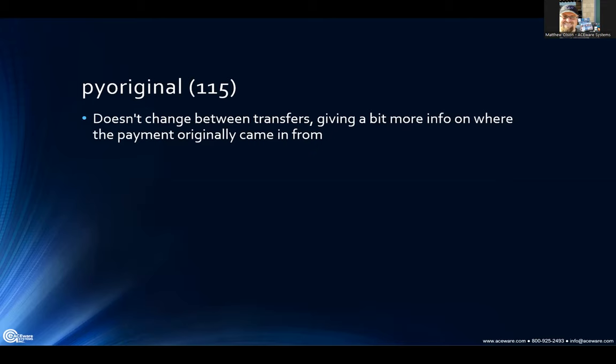New field: we're calling it PY Original. This is exclusively for reporting — it's not going to show on any screens, at least for now. We're using it to keep track of what course the payment was originally paid to. That way, between transfers and other such things, that information isn't changing and you can track where the payment originally came in from. You won't be able to track all movements if you're doing multiple transfers or especially transfer to escrow and back, but at least it gives you where it came from originally and where it currently is.